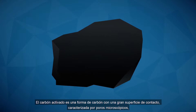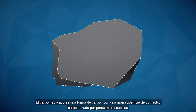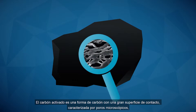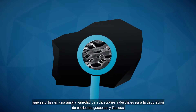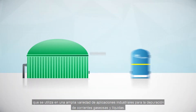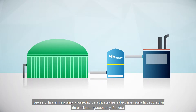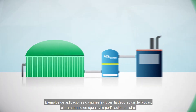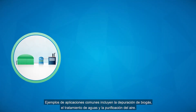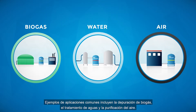Activated carbon is a form of carbon with a very high surface area, characterized by microscopic pores, which is used in a wide range of industrial applications for the purification of gas and liquid phase streams. Examples of common applications include biogas cleanup, water treatment and air purification.